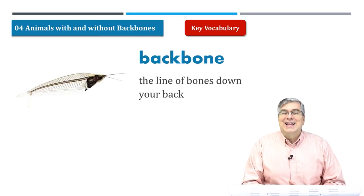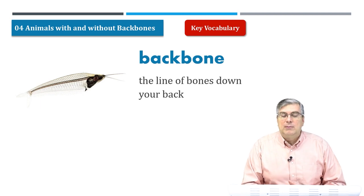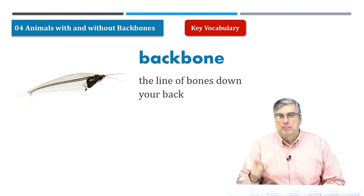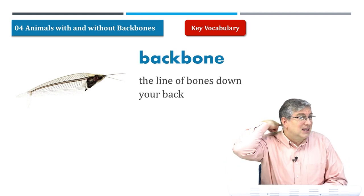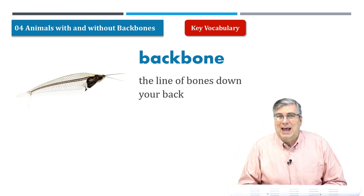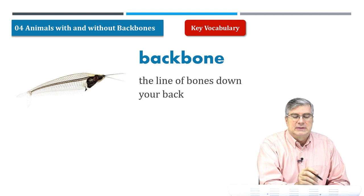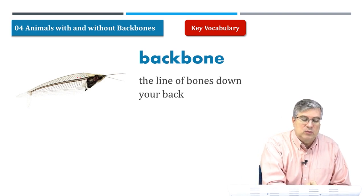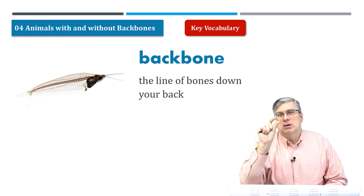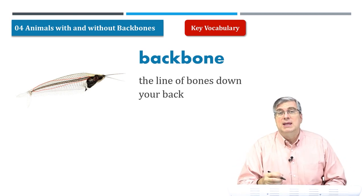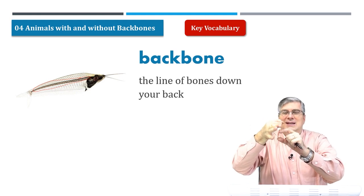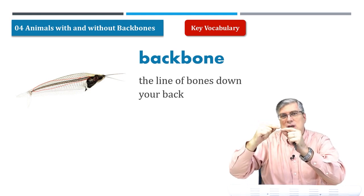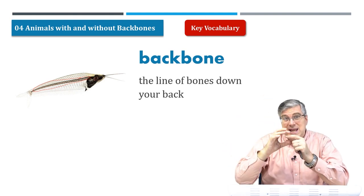The title of the unit is 'Animals With and Without Backbones.' What is a backbone? A backbone is the line of bones down your back. Don't be confused — it's not just one bone. The backbone is made of many smaller bones, like little discs that stack on top of each other in a line, all connected with tissue.